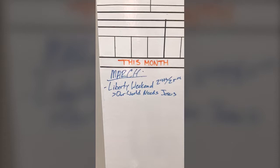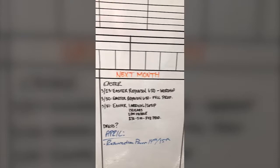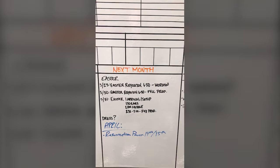This month: special events that we have to work on and songs that fit with that. Next month, same thing — things that we have going on, what songs might fit, and what special events we need to prepare the team for.